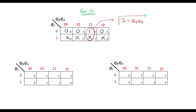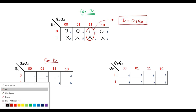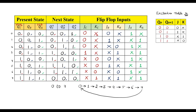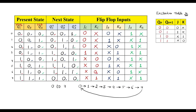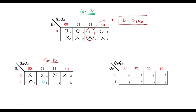Now for KC, entering the K-map values: cells 0,1,2,3 are don't care (x); cells 4,5,6 are 0; cell 7 is 1. The 1 pairs with the x, and the simplified expression is KC = QB·QA.